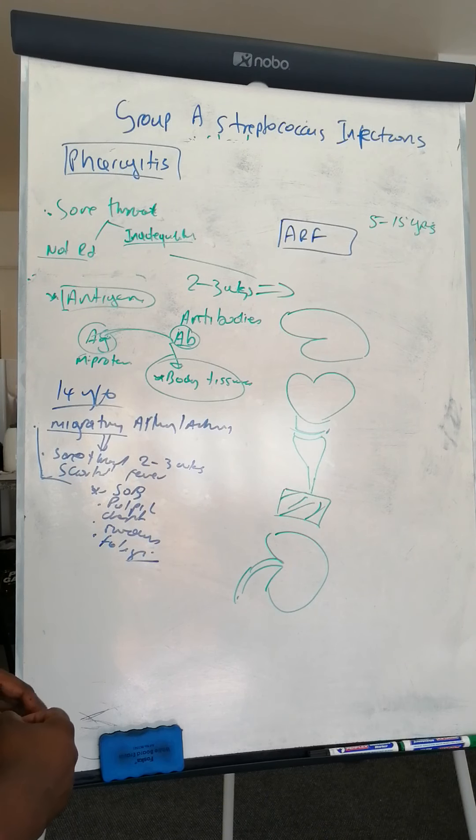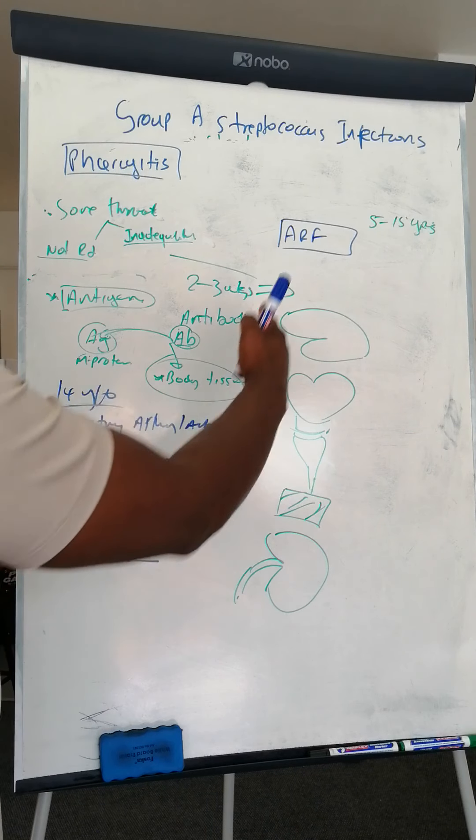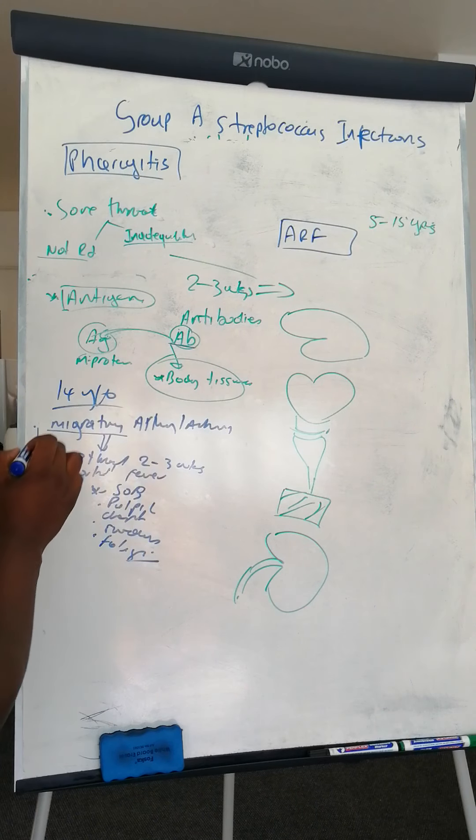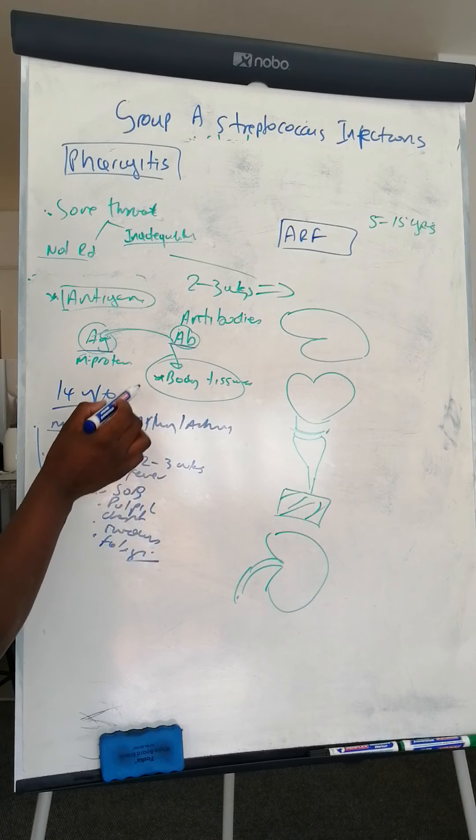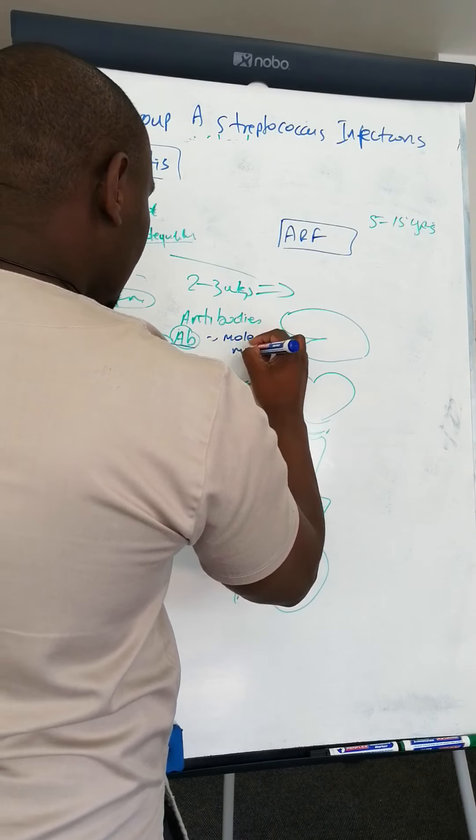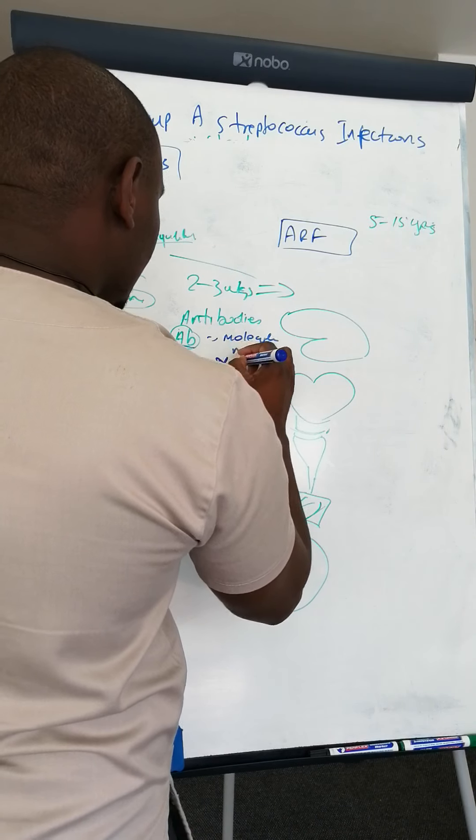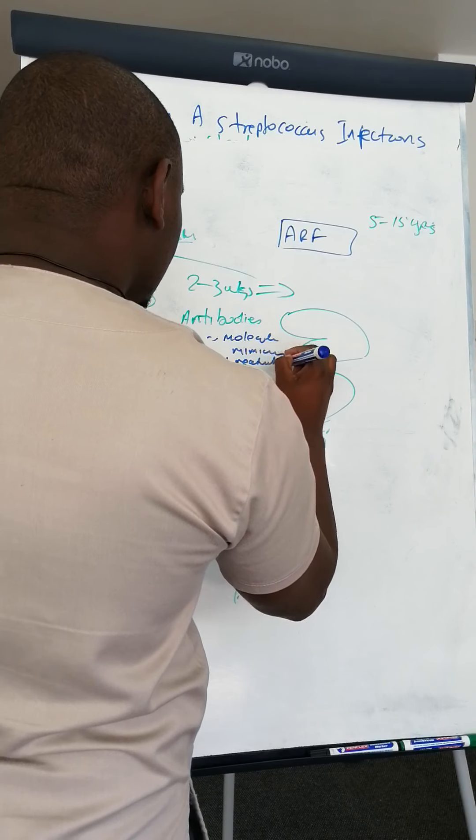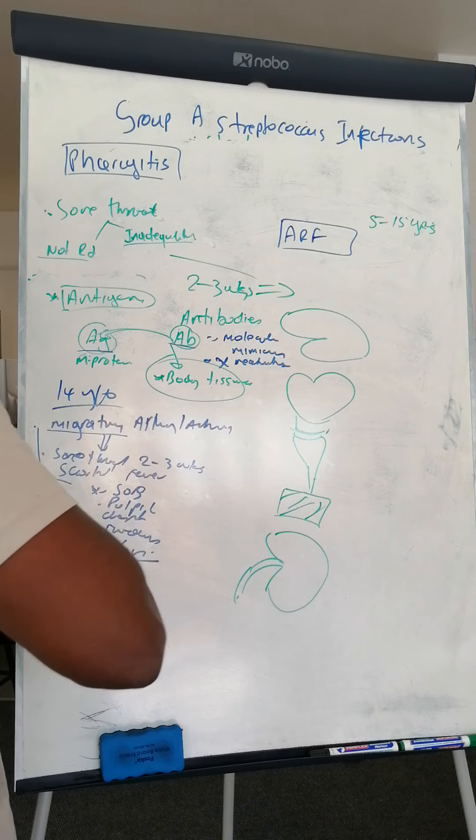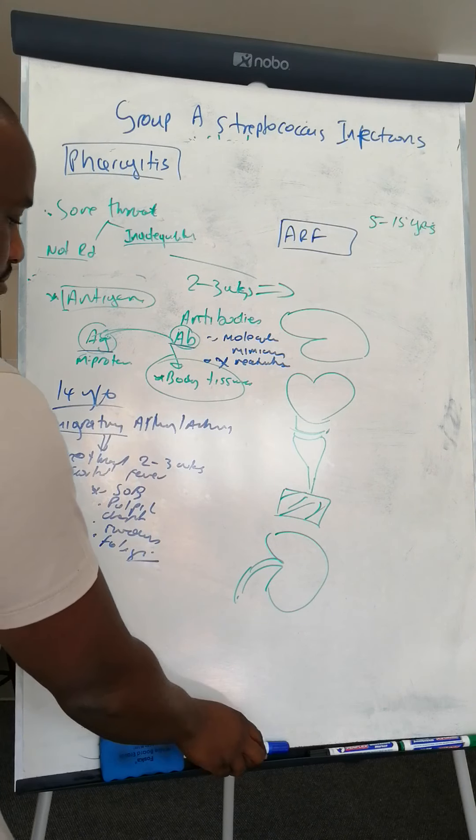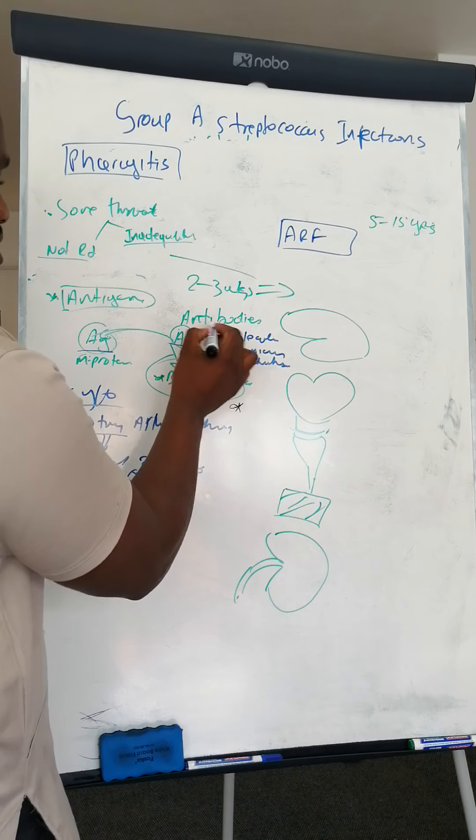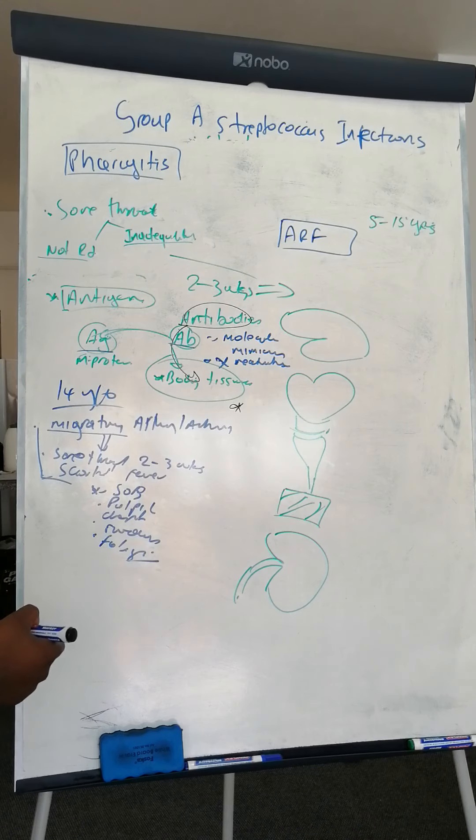So now we're going to get to how do you diagnose. This thing of antibodies that were produced to attack an antigen but they end up attacking body tissues, it's called molecular mimicry or cross-reactivity. That's why many people are comfortable saying that this is an autoimmune disease kind of, because it's the immune system that really causes the problem here.